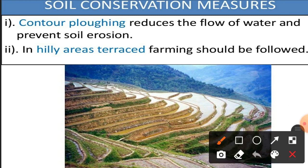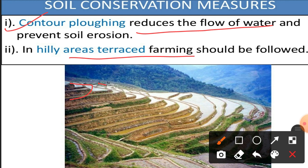The first measure is contour plowing, as shown in the picture. Contour plowing reduces water flow and prevents soil erosion. The second measure, shown in the picture, is terrace farming for hilly areas. We form different terraces — these are different slopes in the form of contours — and a helpful border is maintained on the terrace to hold the soil.